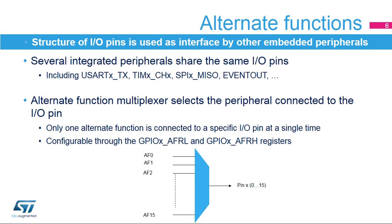Several integrated peripherals, such as the USART, timers, SPI, and others, share the same I/O pins in order to interface with the external environment. Peripherals are configured through an alternate function multiplexer, which ensures that only one peripheral is connected to the I/O pin at a single time. This selection can be changed during runtime of the application through the GPIOX AFRL and AFRH registers.